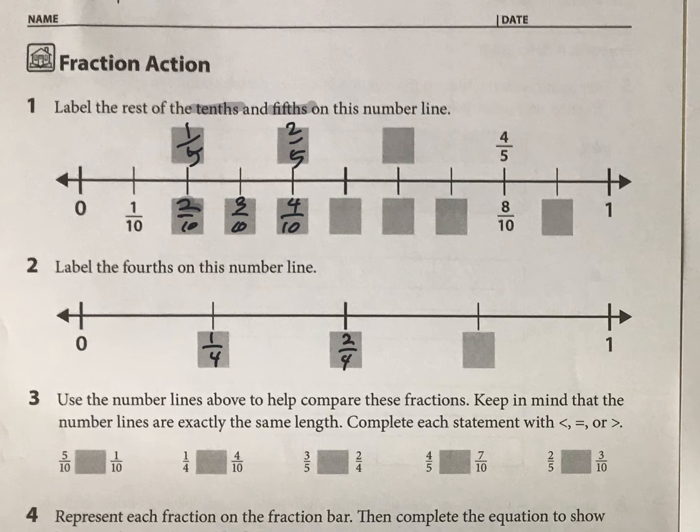So then basically, you're using these two number lines to help you do this part down here. So for example, if I was comparing one fourth to four tenths, it looks to me that one fourth is less than four tenths. So I'll fill it in as less than four tenths. And just use all of the numbers above these on number one and two to help you solve number three.